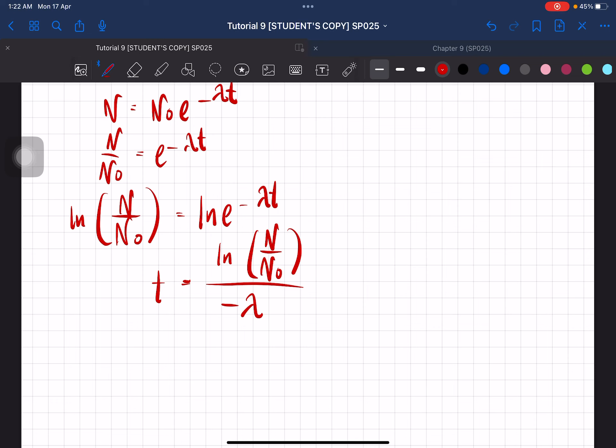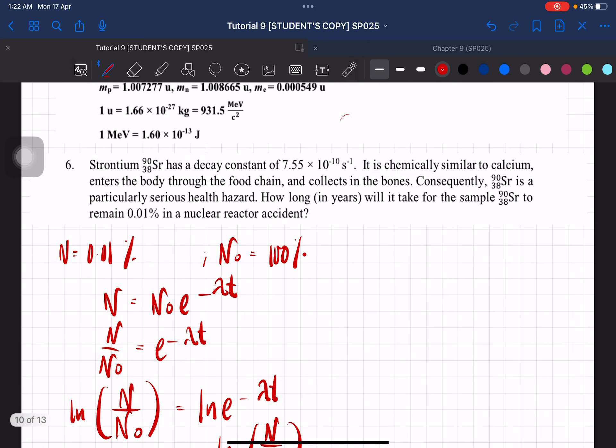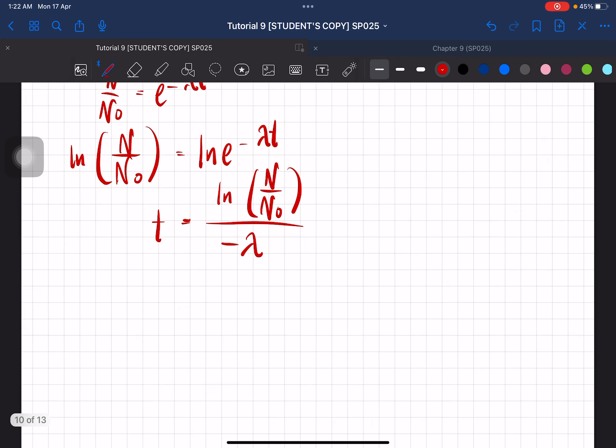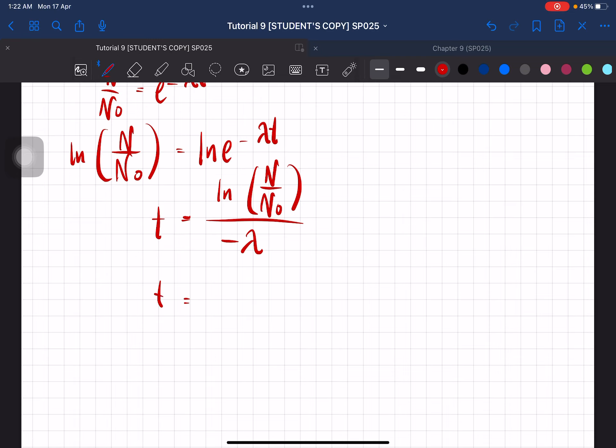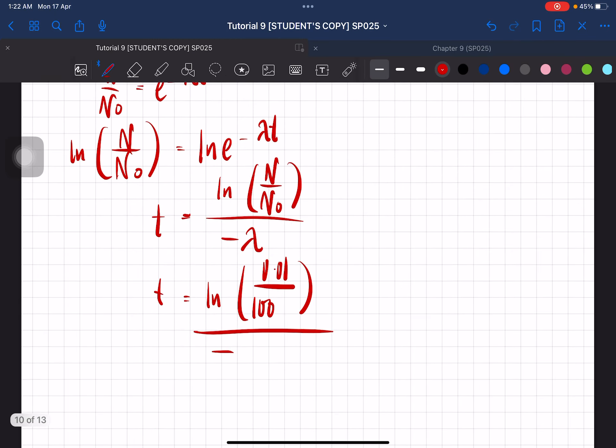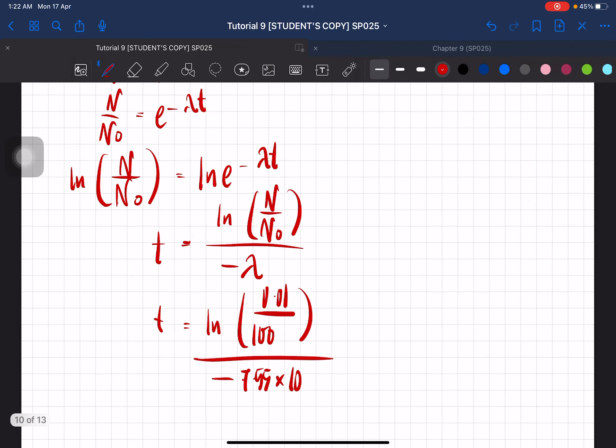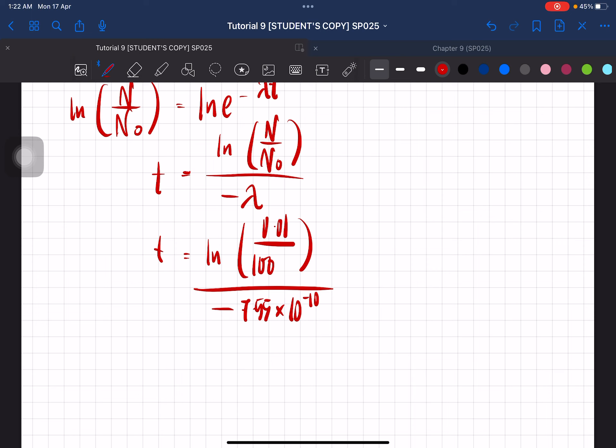Okay, so it's gonna be 0.01 divided by 100. This is negative lambda, which is 7.55 times 10 to the negative 10.